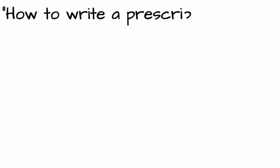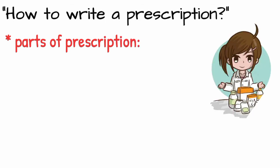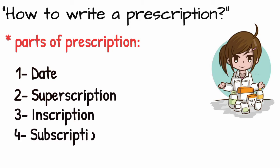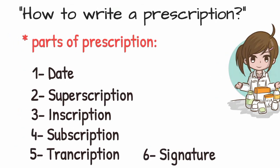In order to understand how a prescription must be written, we must first understand the parts of a prescription that altogether make it an ideal one. These are: number one, date; number two, superscription; number three, inscription; number four, subscription; number five, transcription; and the last one, signature. I'm going to explain all these parts one by one.